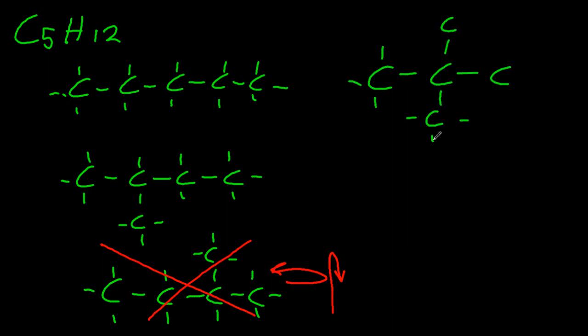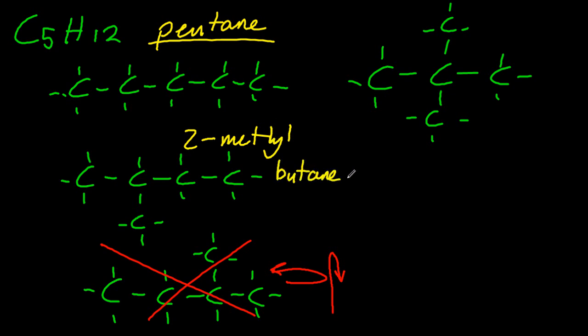And the third one is that one there. So we have pentane, two-methyl butane, and two, two-dimethyl propane. Commas between the numbers and a dash between the number and the word.